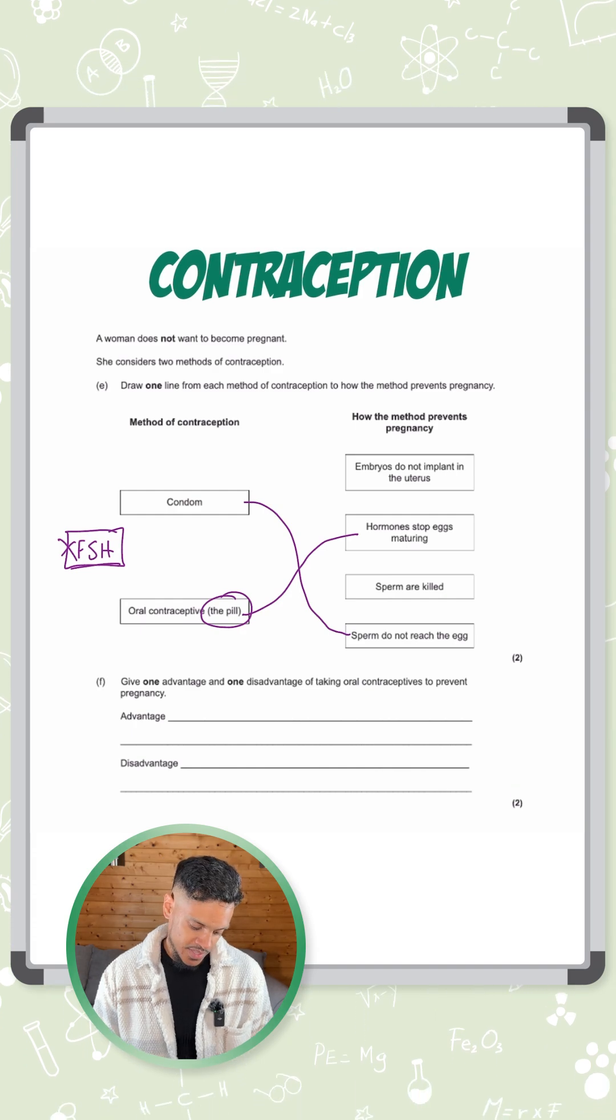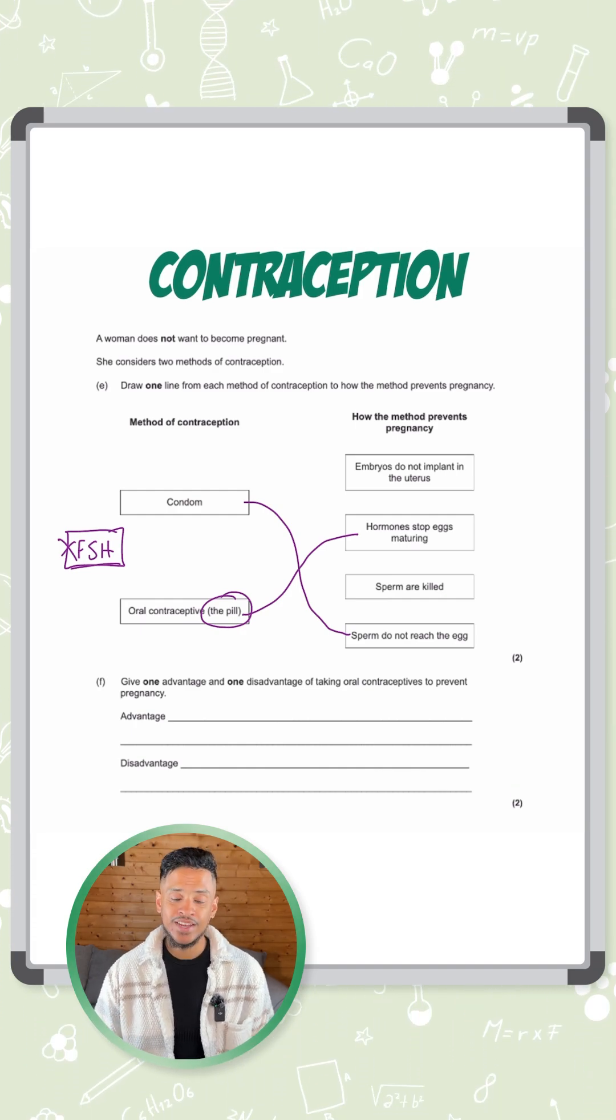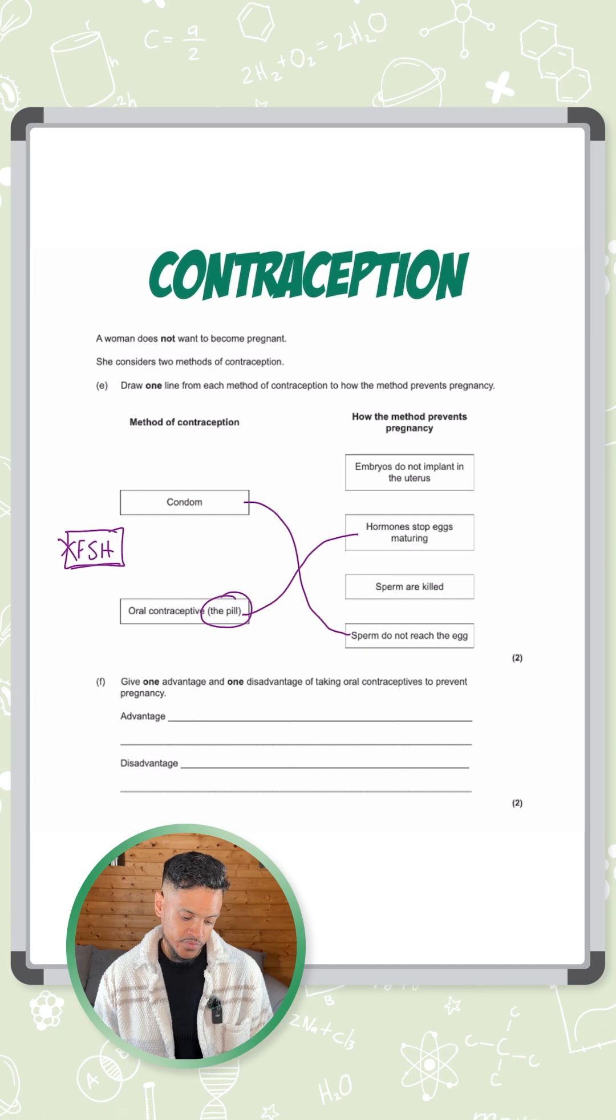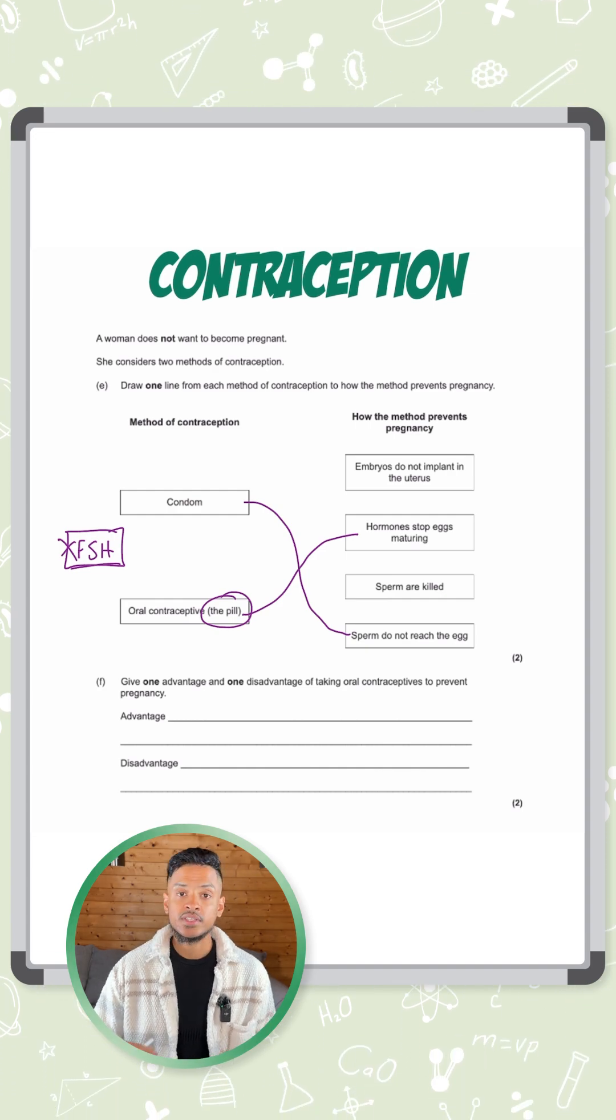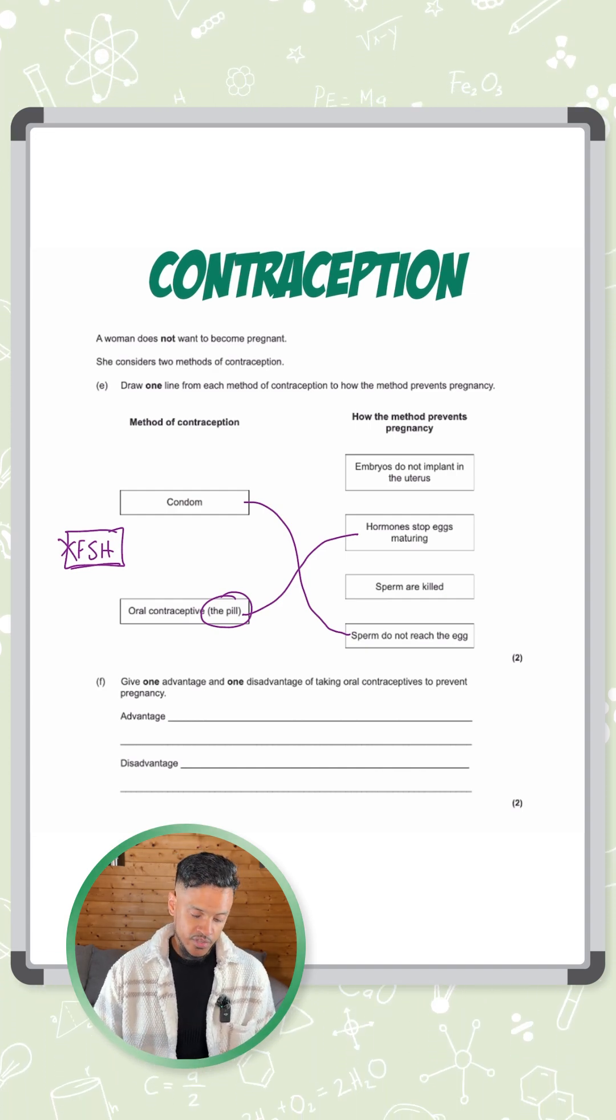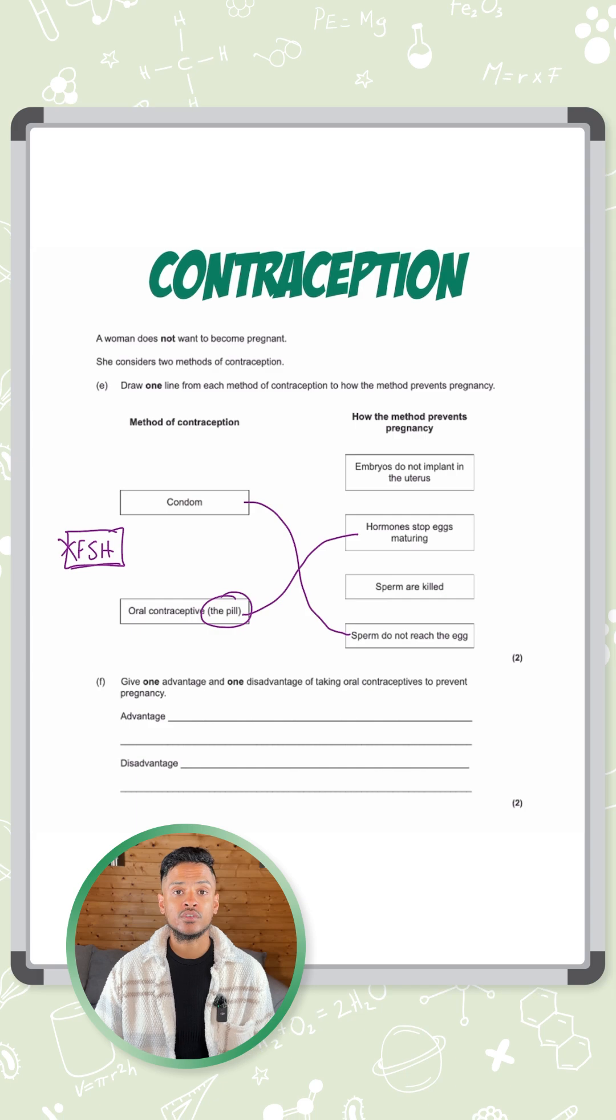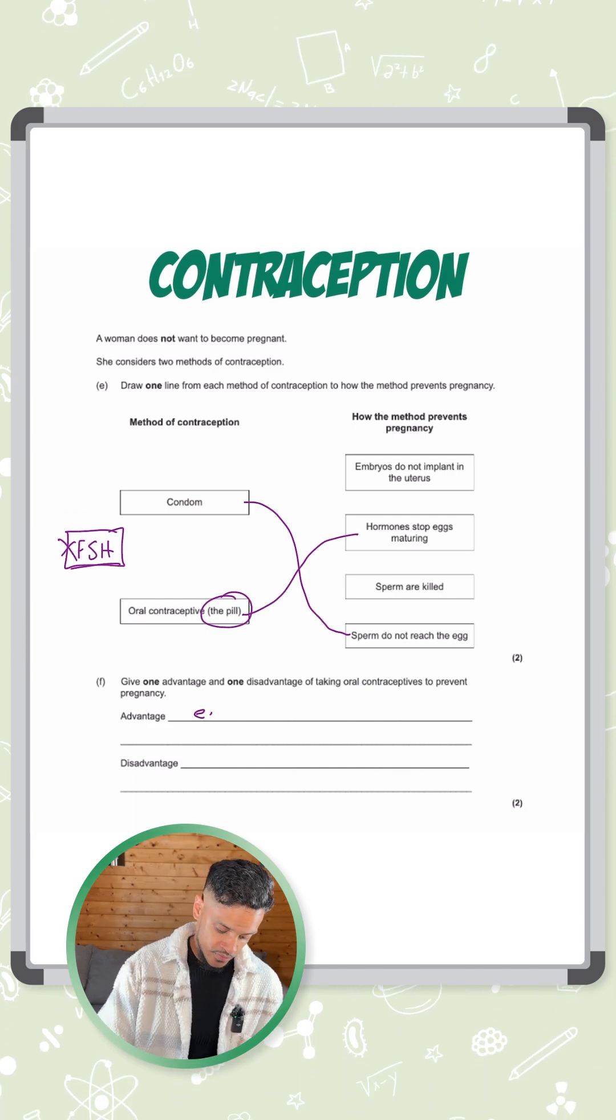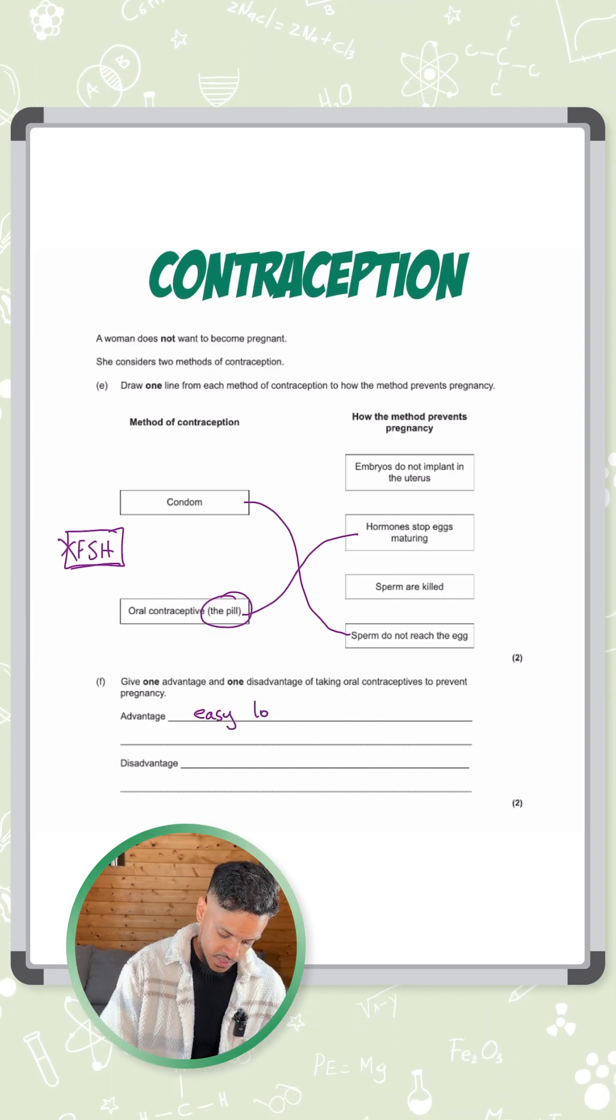Part two of this question says give one advantage and one disadvantage of taking oral contraceptives to prevent pregnancy. So this is like taking the pill. Advantage of it is very easy to take. There's no doctors required for it. So advantage is easy to take.